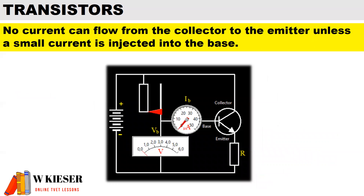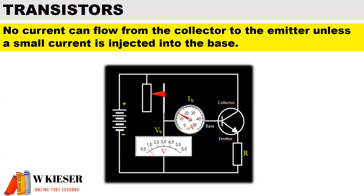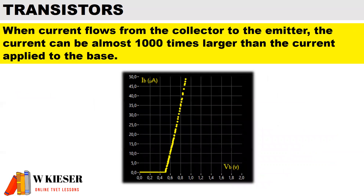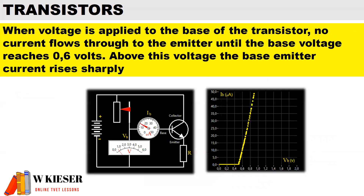No current can flow from the collector to the emitter unless a small current is injected into the base. When current flows from the collector to the emitter, it can be up to almost a thousand times larger than the current applied to the base. When voltage is applied to the base of the transistor, no current flows through to the emitter until the base voltage reaches at least 0.6 volts. Above this voltage, the base-emitter current rises sharply.